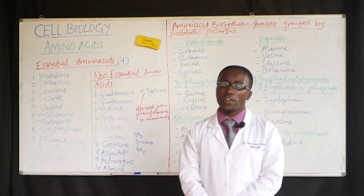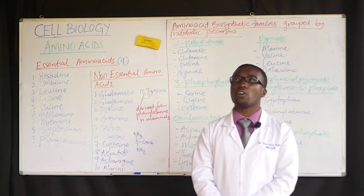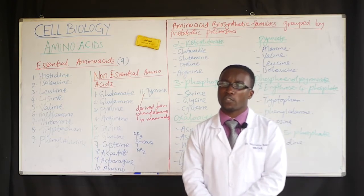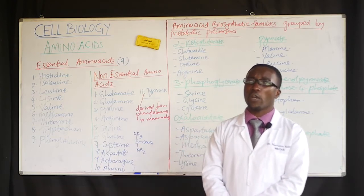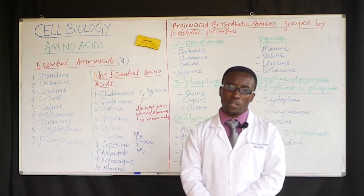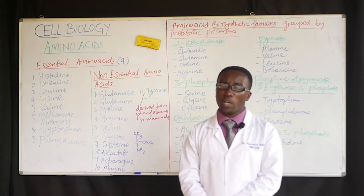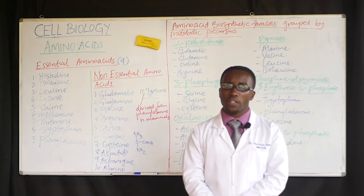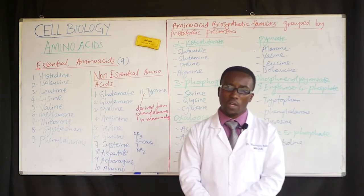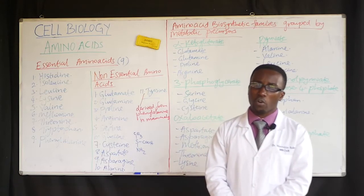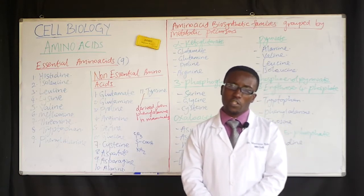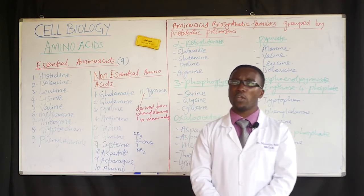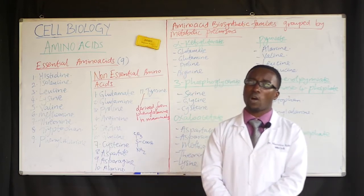Most, if not all, enzymes are made up of proteins. When amino acids come together, they form peptides; when many peptides come together, they form polypeptides; and when several polypeptides come together, they form a protein. That is why we see many enzymes being made out of proteins.